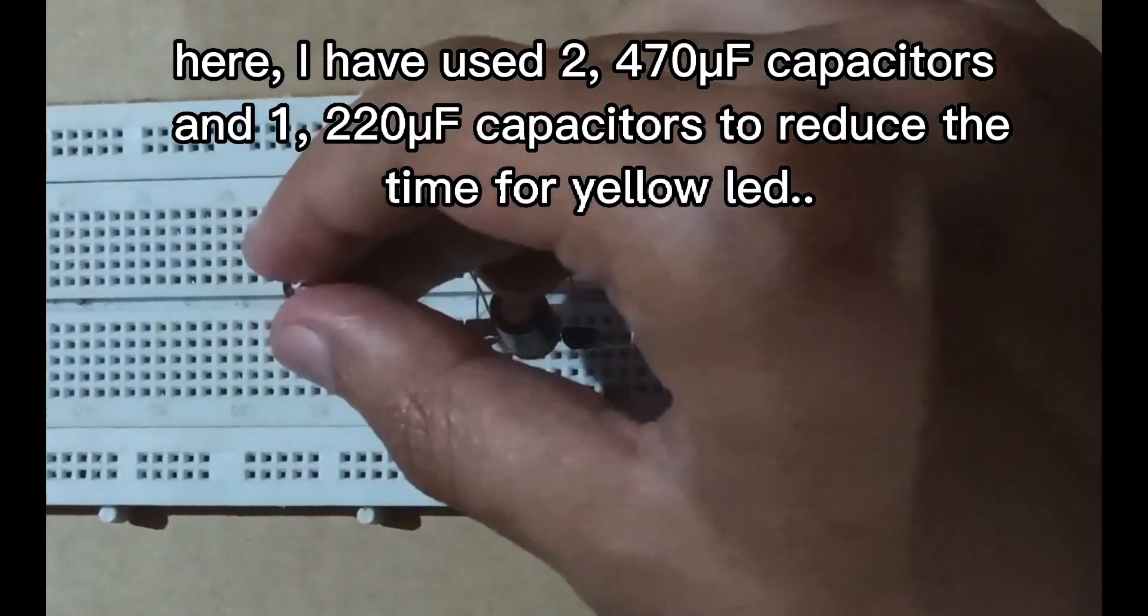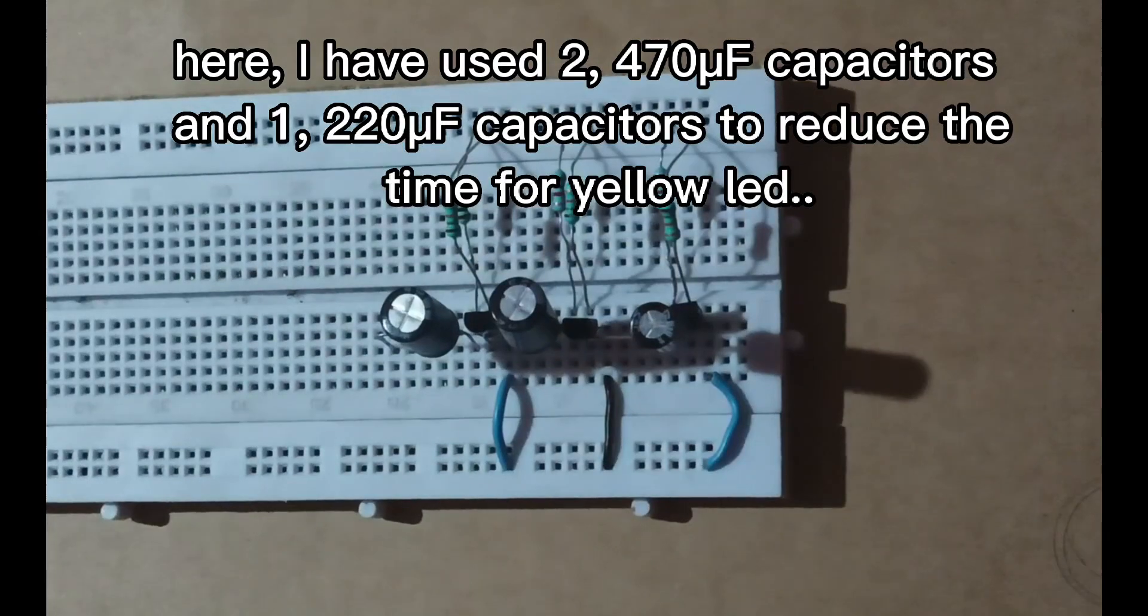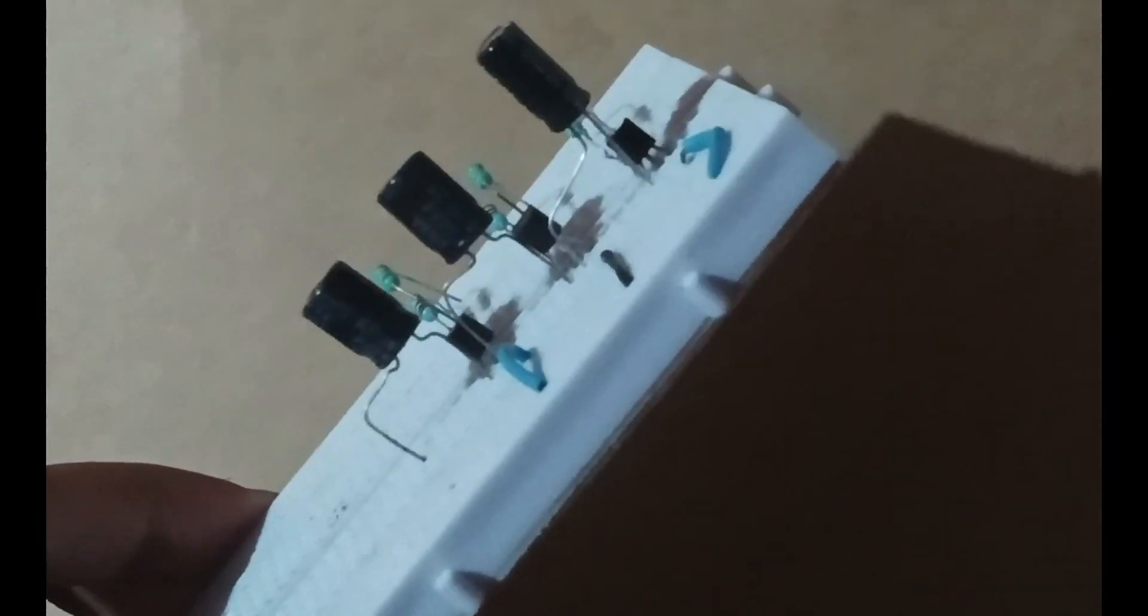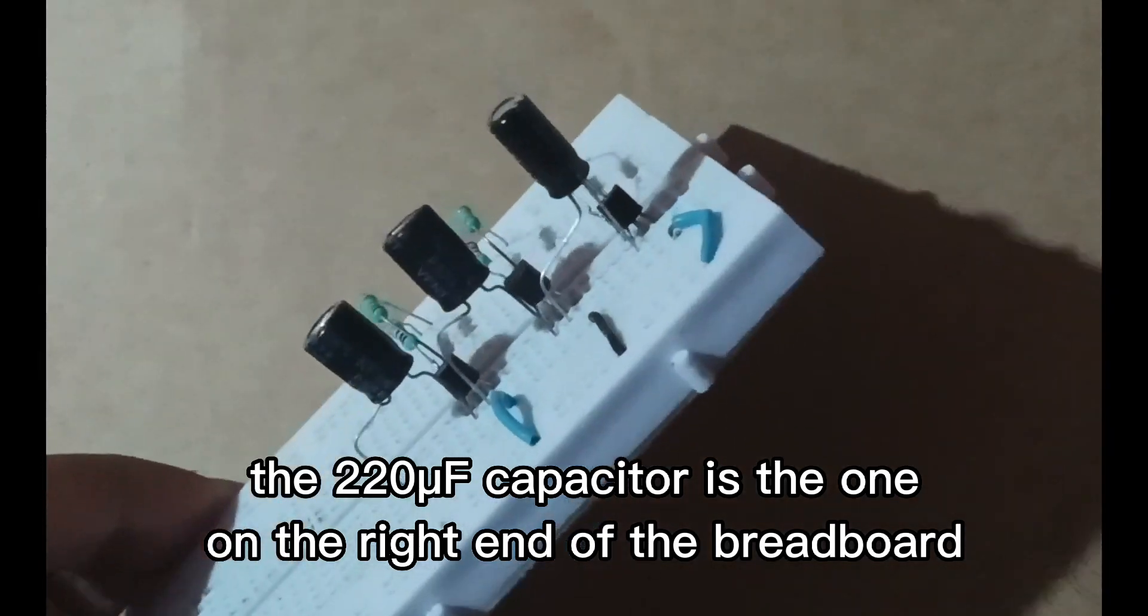Here I have used 2.7µF capacitors and 1.2µF capacitor to reduce the time for yellow LED. The 2.2µF capacitor is the one on the right end of the breadboard.